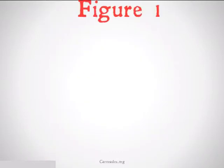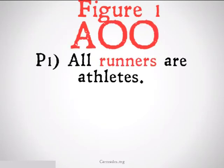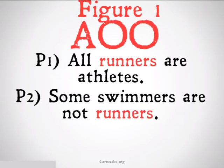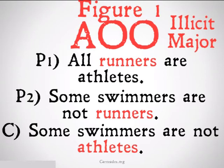Let's take a look. Figure 1A00: All runners are athletes. Some swimmers are not runners. Therefore, some swimmers are not athletes. This is going to be invalid because athletes is going to be distributed in the conclusion — that's our major term — but not in the first premise where it appears, so this is going to be illicit major.